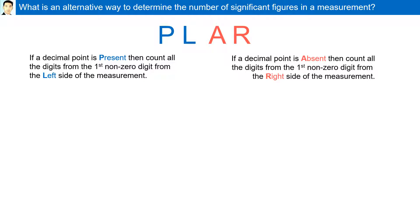AR: If a decimal point is absent (A), then count all the digits from the first non-zero digit from the right (R) side of the measurement.